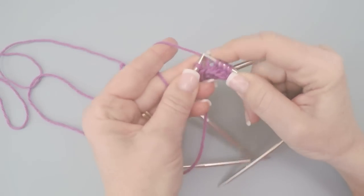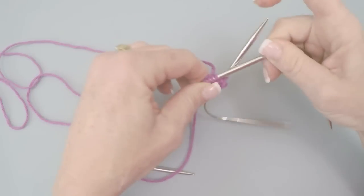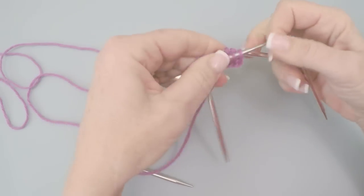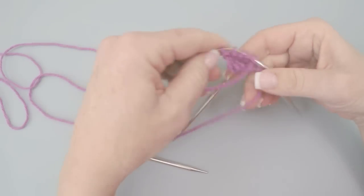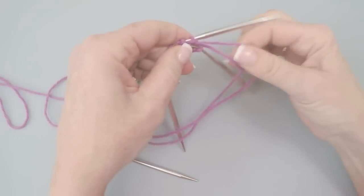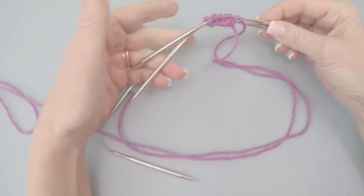And I'm going to slide it down. So that's a completed round. And I know this because the tail and the working yarn are at the same spot right there. So that's how you use them.